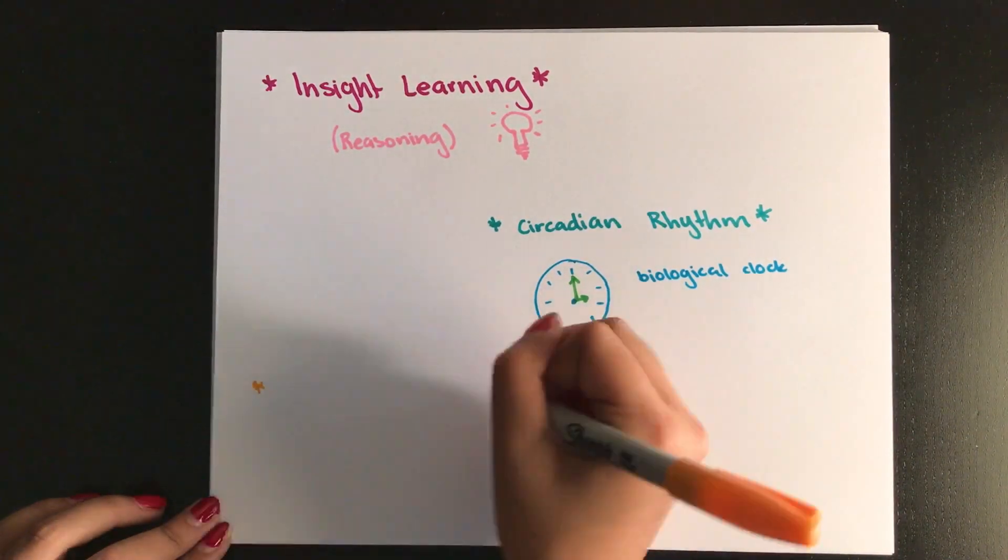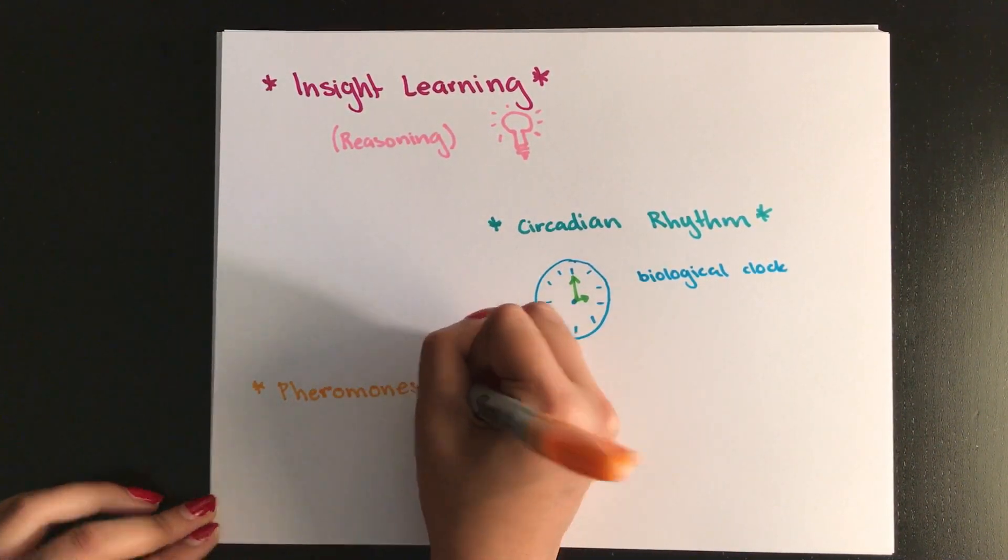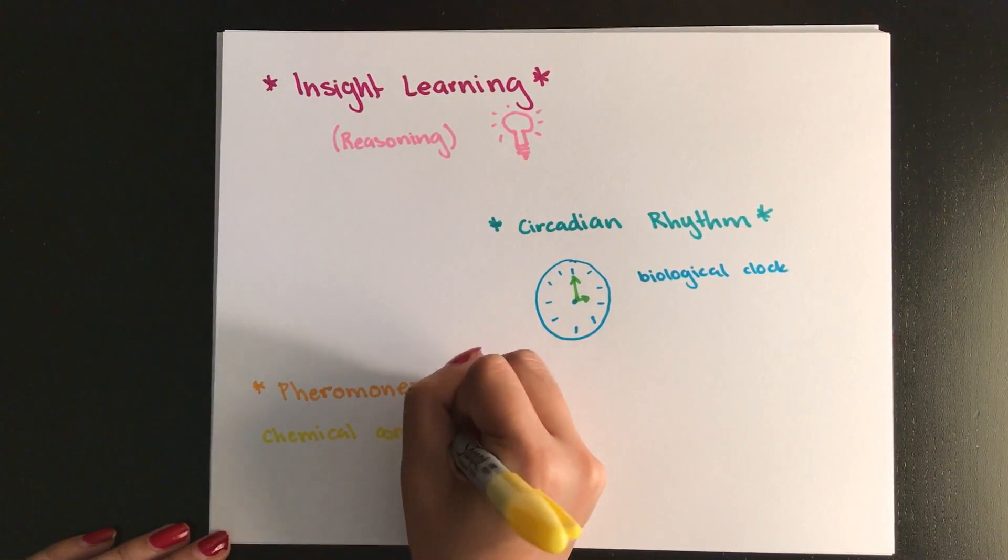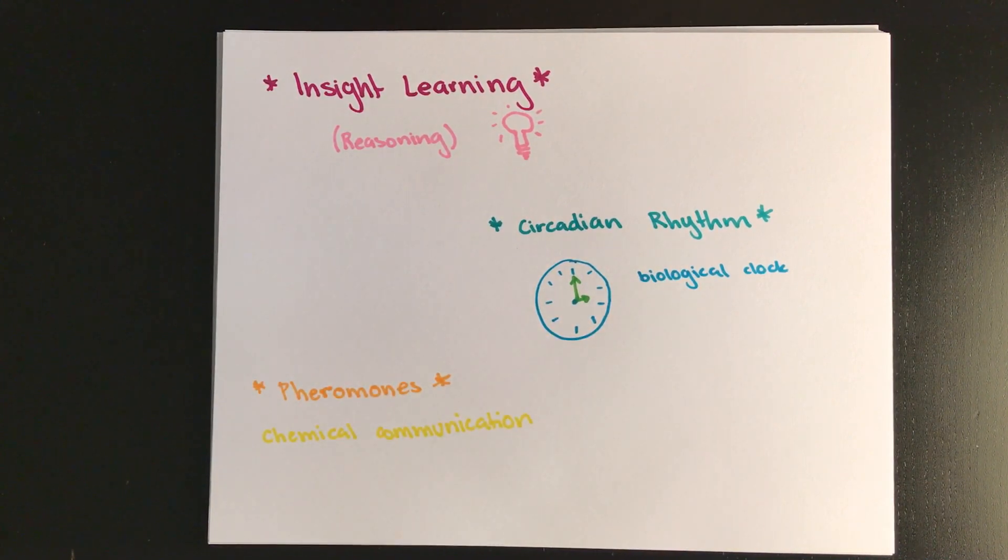A pheromone is released by one member of a species, and it affects another member of the species, but the way it affects them is predictable. You do it on purpose, maybe you don't do it consciously, but it's for a reason.